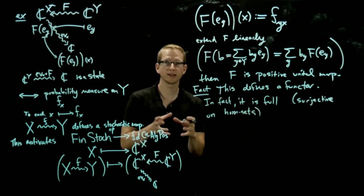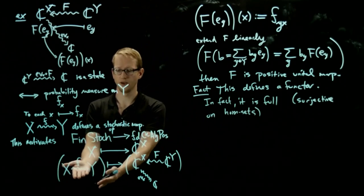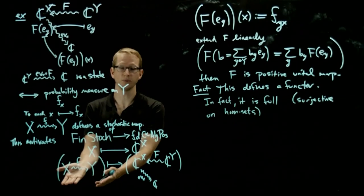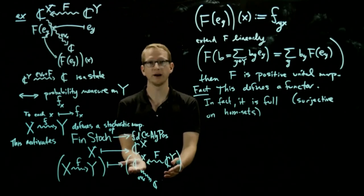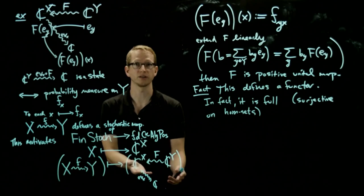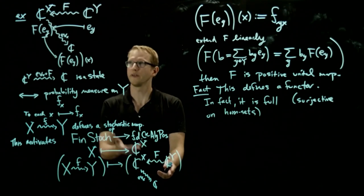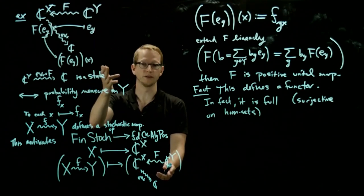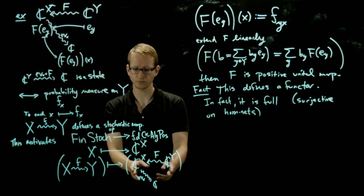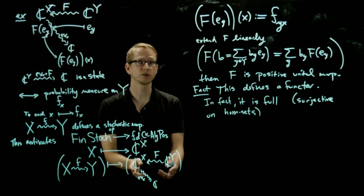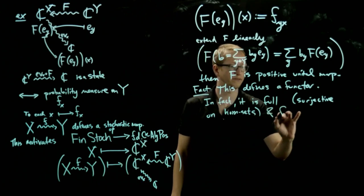Which means if I take two objects X and Y, and I look at the set of morphisms — stochastic maps — and then the set of positive maps between C(Y) and C(X), that map is a surjection. And we already know that's true from the construction. It turns out that's not only a surjection, it's also an injection. So this becomes a bijection — it is full and faithful. Faithful means injective on hom sets.